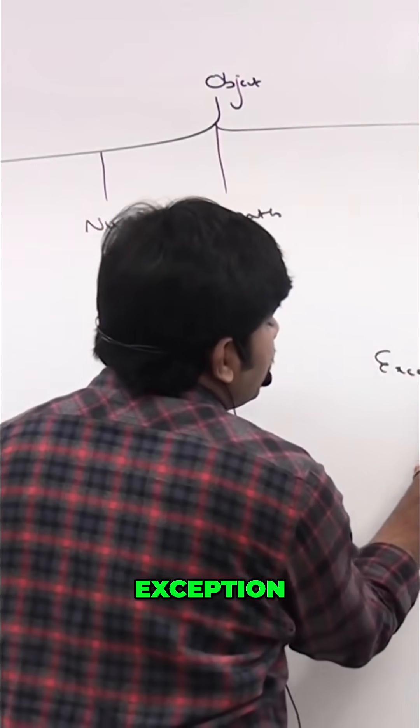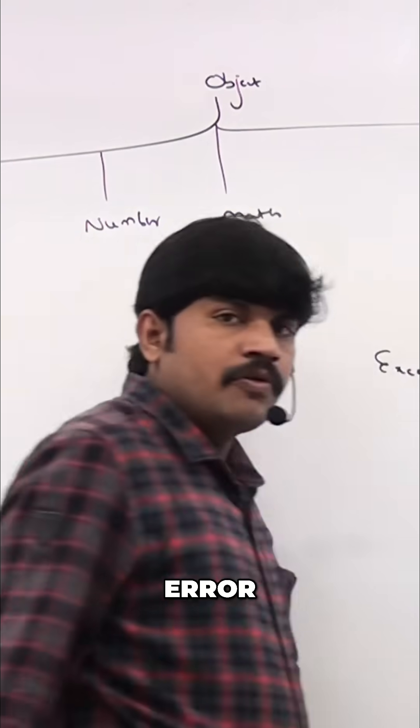What's the first one? Exception. Second one, Error. For the Exception, anyway, there are several children classes are there.